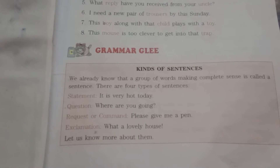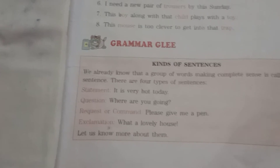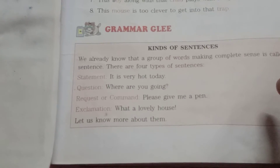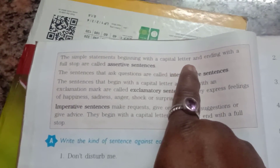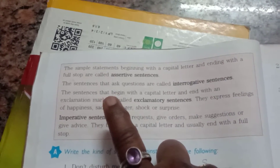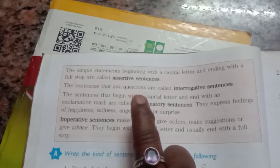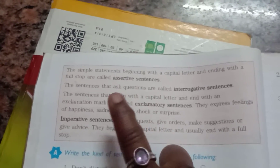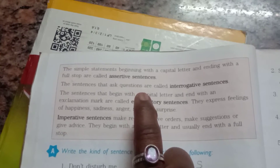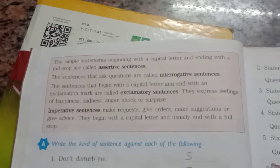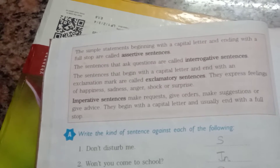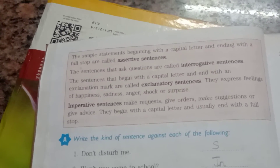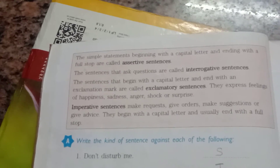This is called an exclamation. Let us know more about each type. Simple statements begin with a capital letter and end with a full stop — these are called assertive sentences. An assertive sentence is a simple sentence; it starts with a capital letter and ends with a full stop.